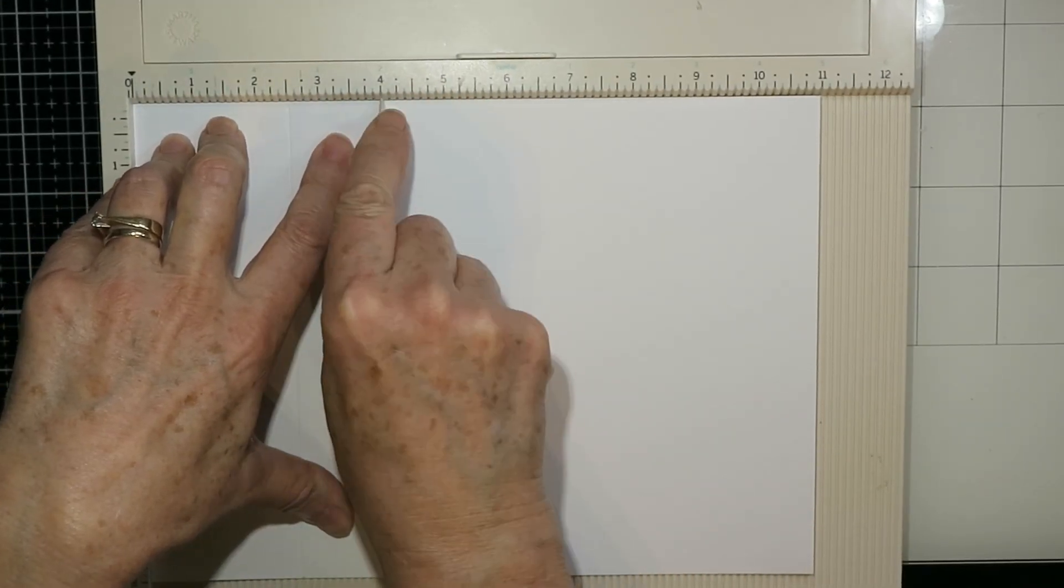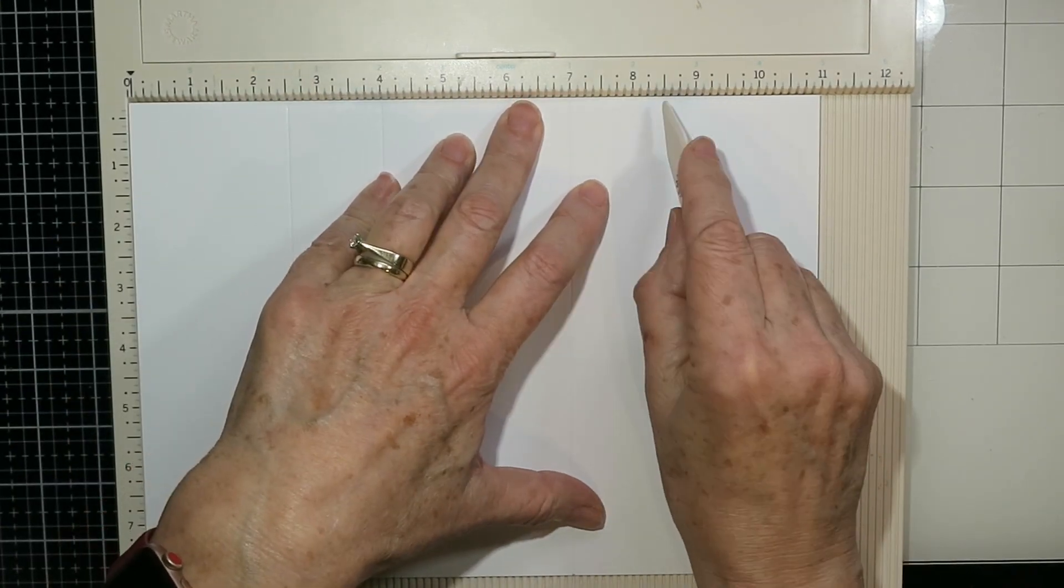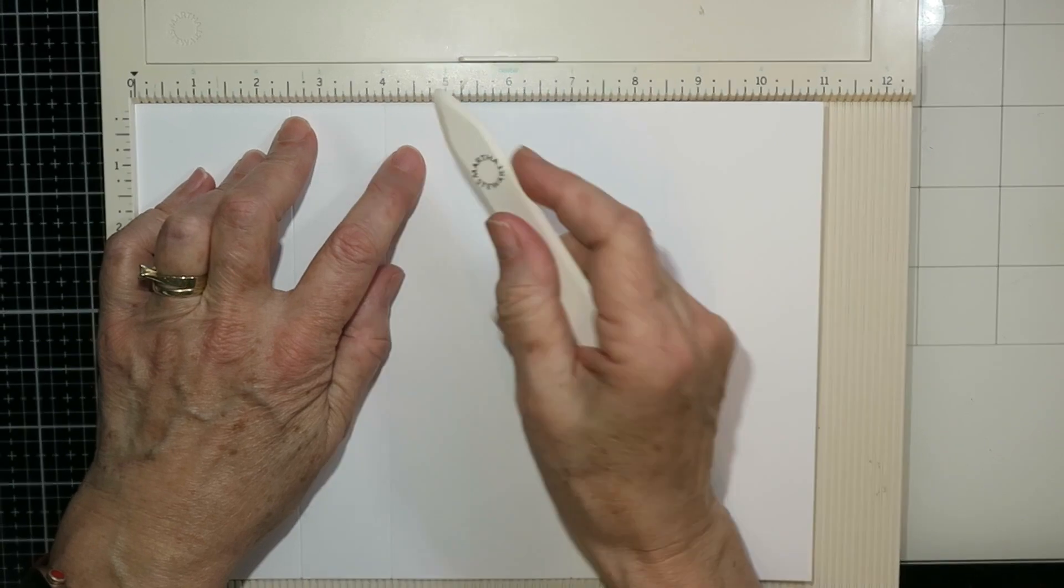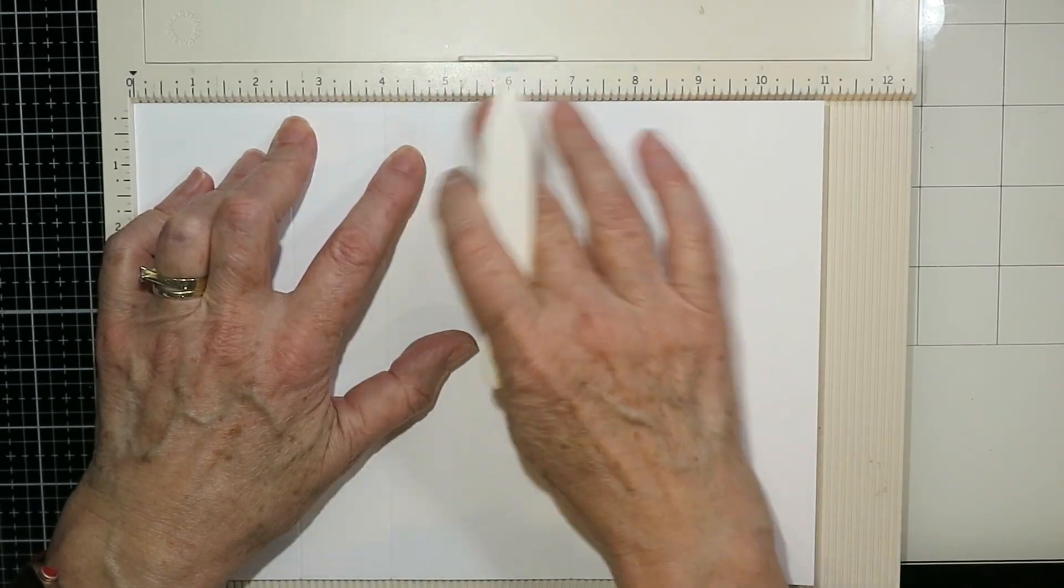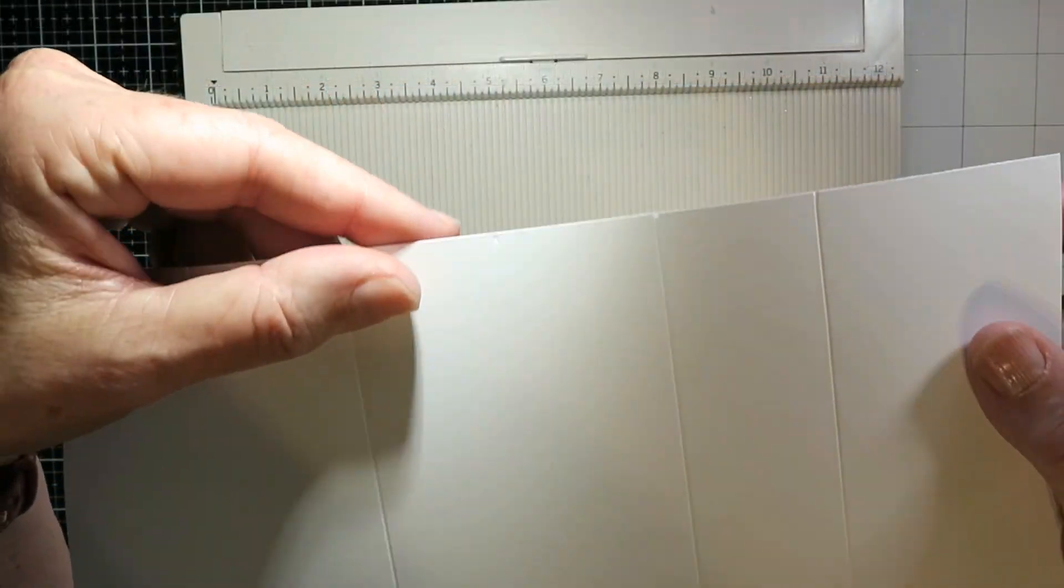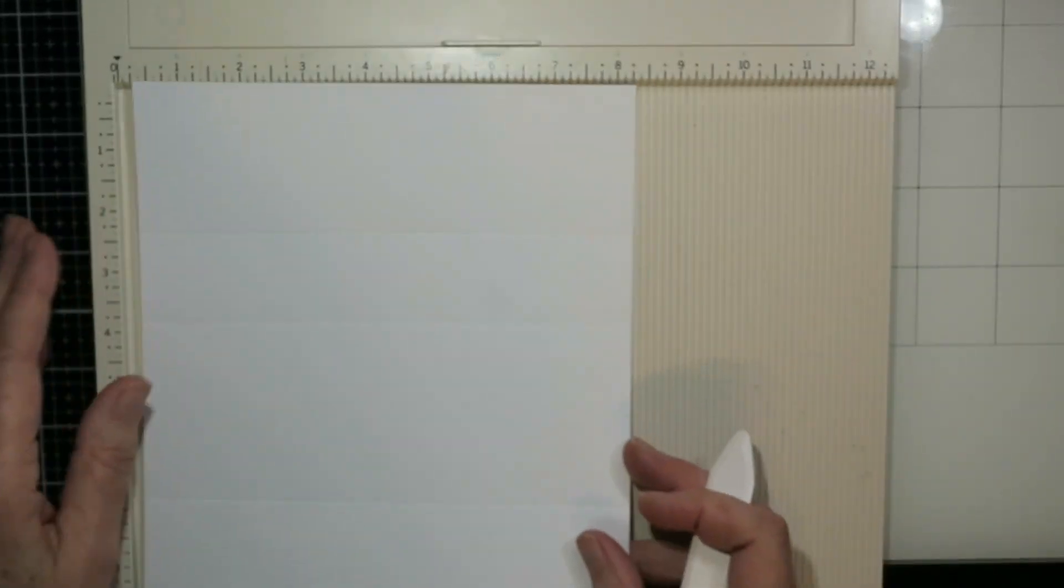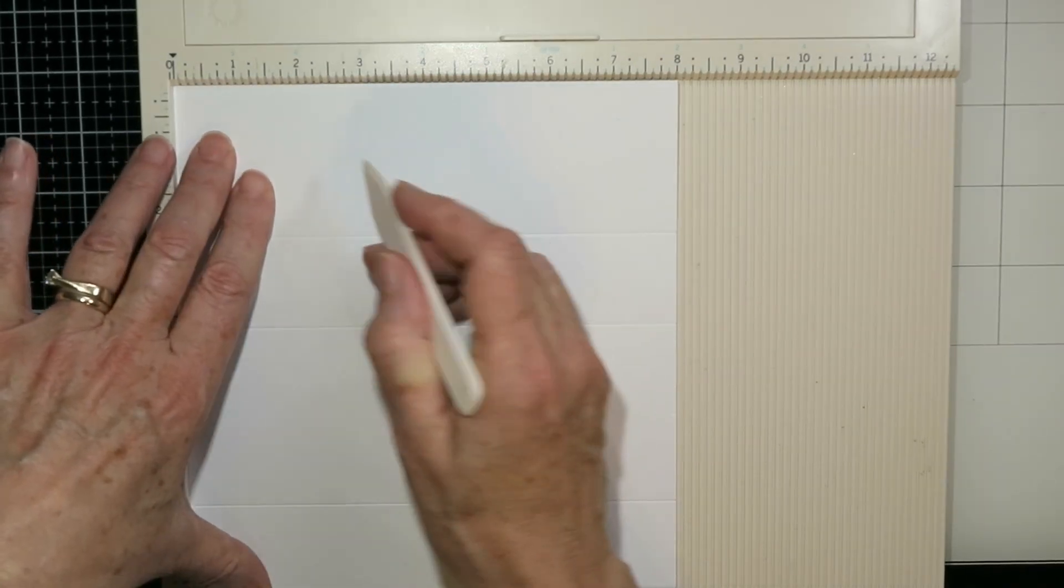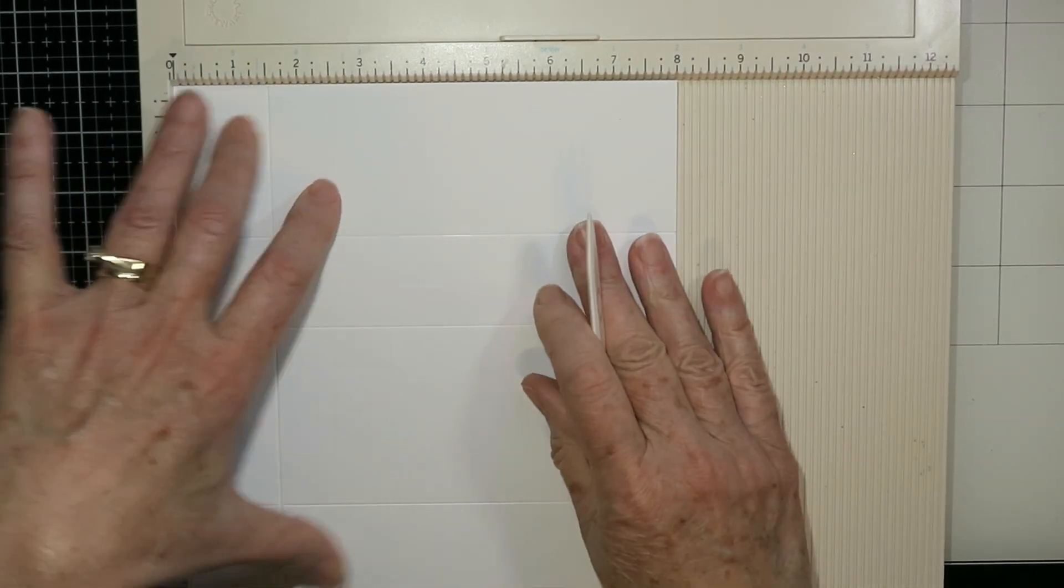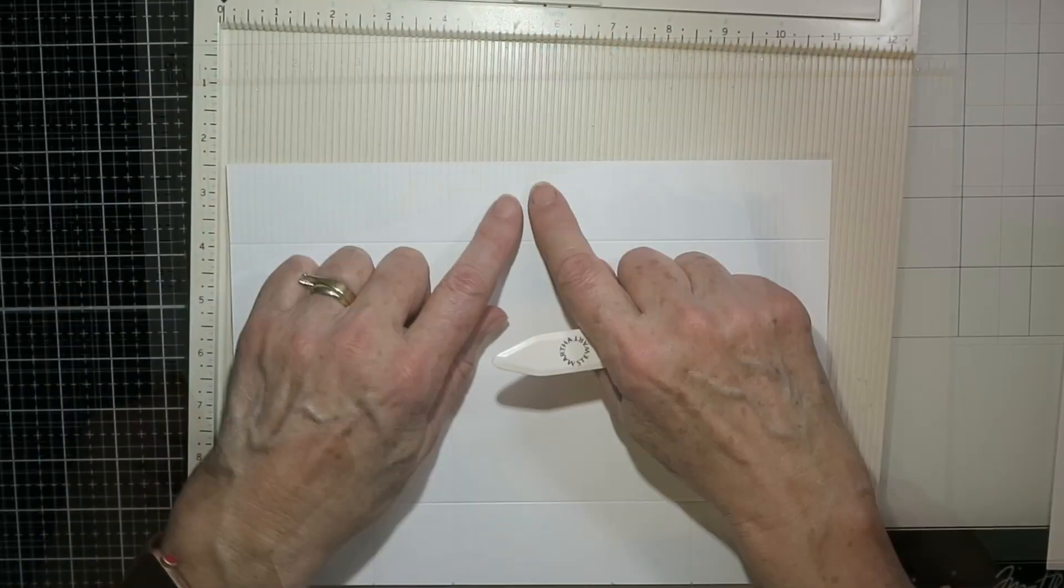So here I'm scoring it on the 11 inch side at two and a half inches, four inches, seven inches, and eight and a half inches. And then what you want to do is mark the center point, which is five and a half inches. So I'm just using my little score tool there, just to put a little mark or a nick, and again on the bottom edge as well. So you can see that little mark there. You could put a pencil mark if you want, but you would have to erase the pencil afterwards. Now I've rotated it, and I'm going to score again at one and a half inches and six and a half inches.